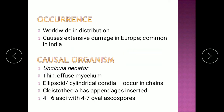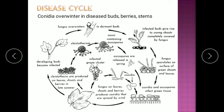Powdery mildew of grapes is also worldwide in distribution and is caused by Uncinula necator. This organism produces thin effused or highly branched mycelium with ellipsoidal or cylindrical conidia that occur in chains on conidiophores. This organism also has a Cleistothecium, though it is not very commonly formed. If formed, the Cleistothecium has appendages inserted in it, will have 4 to 6 asci, and each ascus will have 4 to 7 ascospores.